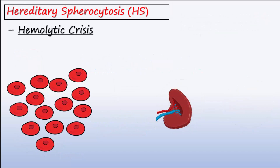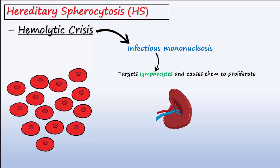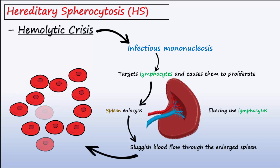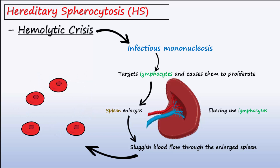A hemolytic crisis in HS patients may occur when an intercurrent event such as infectious mononucleosis leads to increased destruction of RBCs in the spleen. Infectious mononucleosis targets lymphocytes and causes them to proliferate. The spleen enlarges as it attempts to filter the lymphocytes in the blood. Blood flow through the spleen is now even more sluggish, increasing the rate that red blood cells are also destroyed, making patients more prone to developing hemolytic anemia.